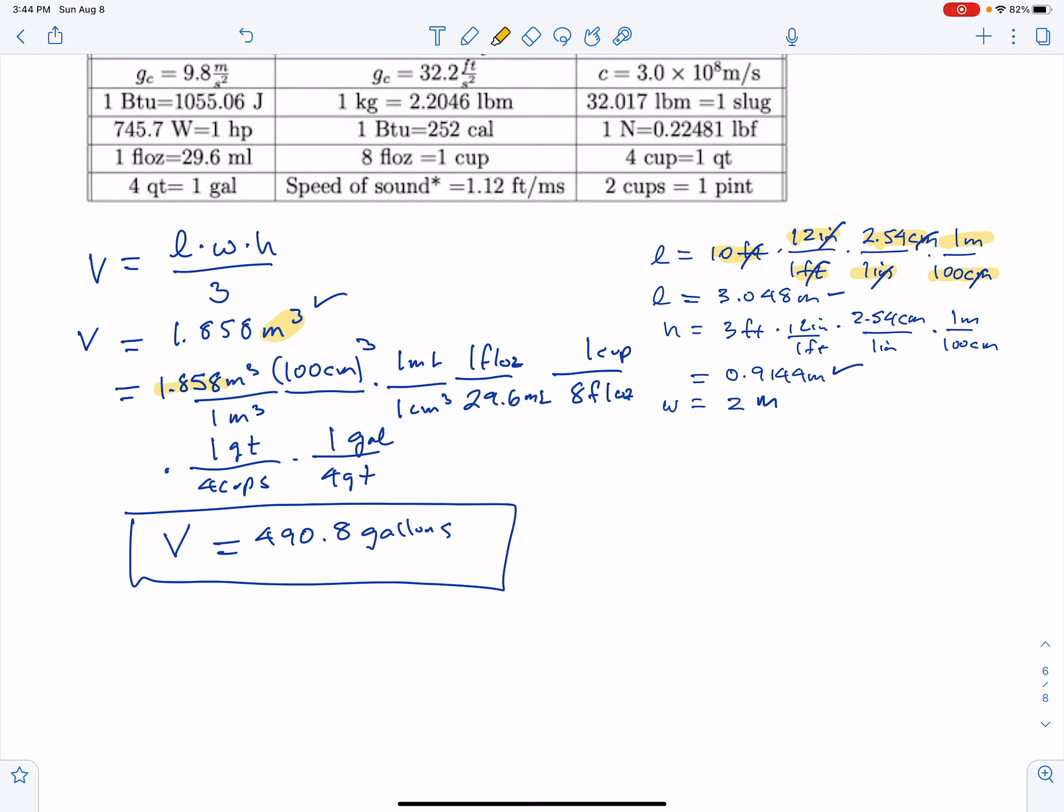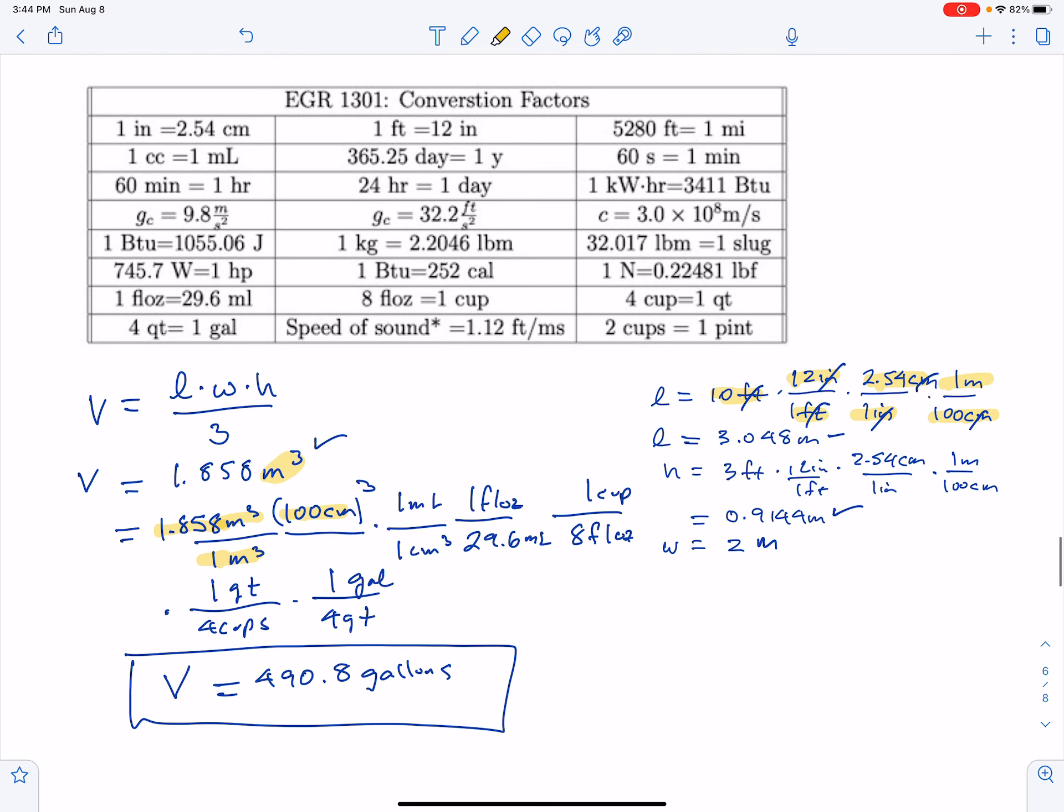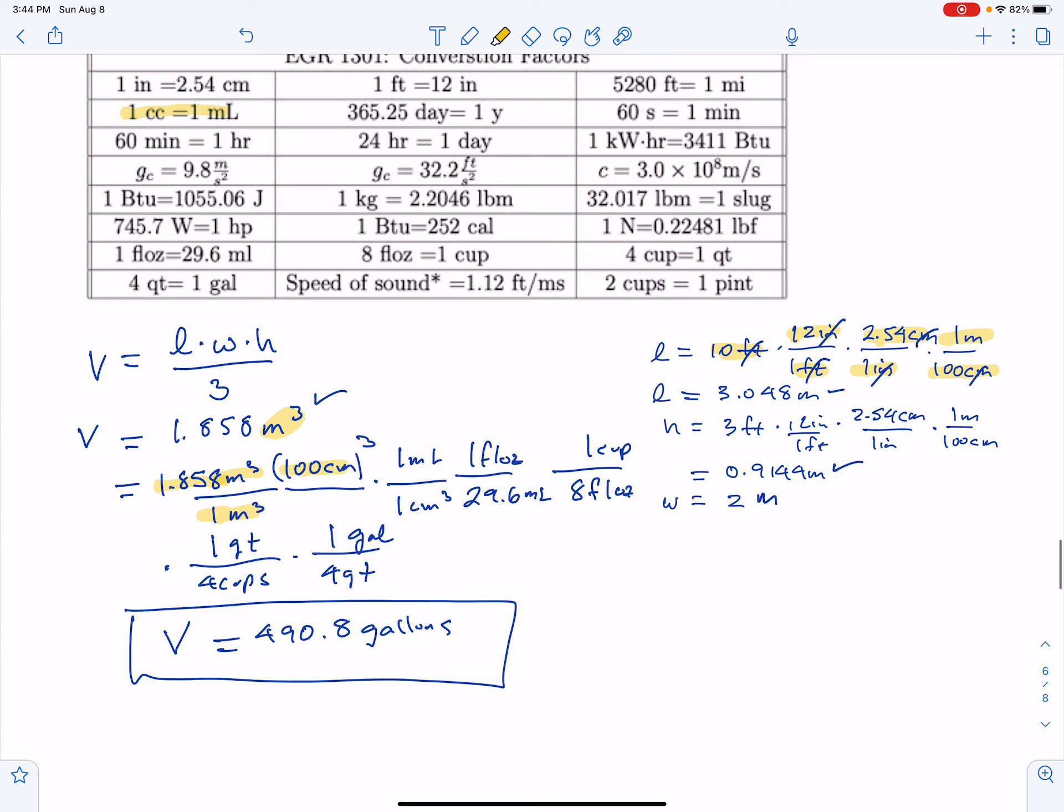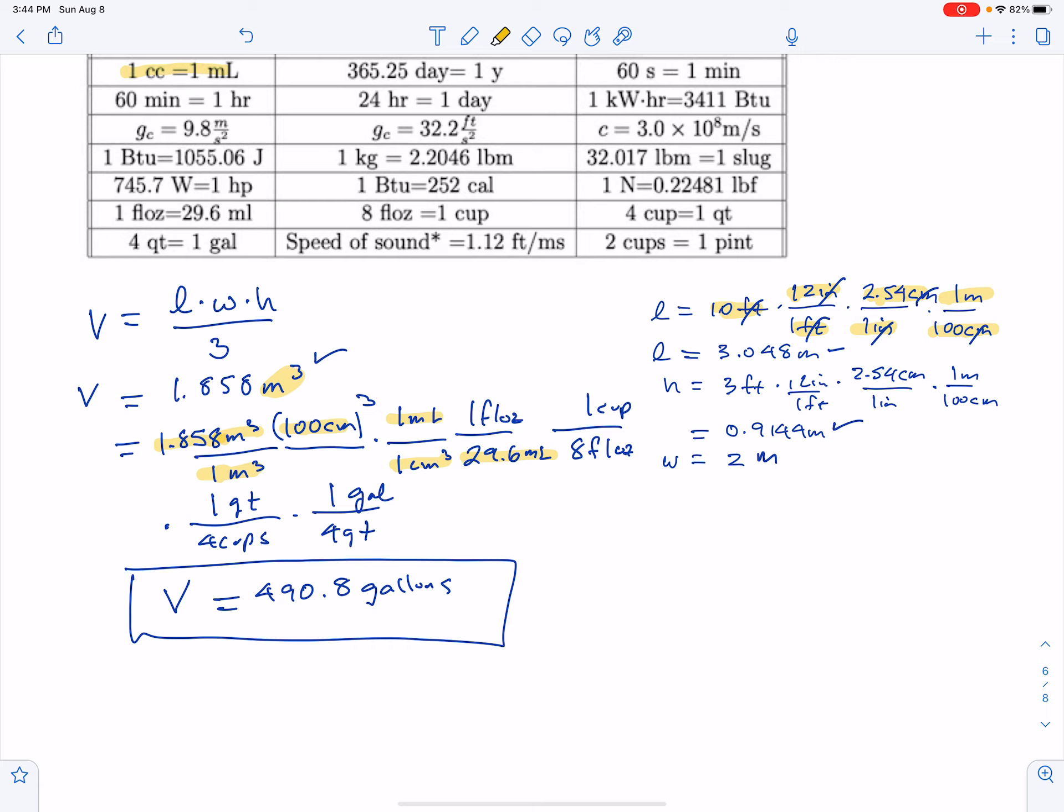I start with 1.858 cubic meters. In one cubic meter there's 100 cubic centimeters, so I have to cube the 100 as well - the meters is cubed, so the 100 centimeters needs to be cubed as well. One cubic centimeter is one milliliter, and from there 29.6 milliliters in one fluid ounce, eight fluid ounces in a cup, four cups in a quart.